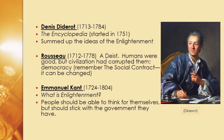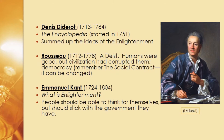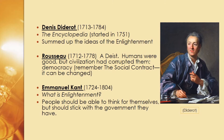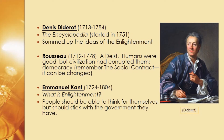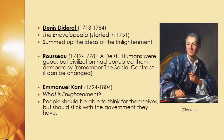You also have Immanuel Kant, who wrote What is the Enlightenment? He believed in the social contract as well, but thought that once people chose a government, they should stick with it — they shouldn't be able to change their government.